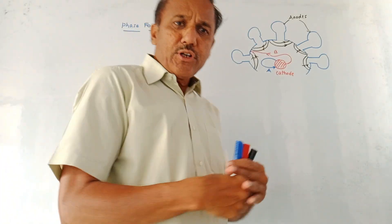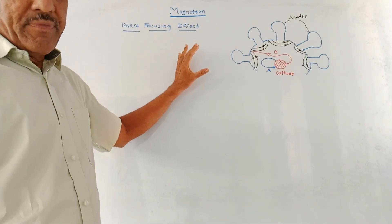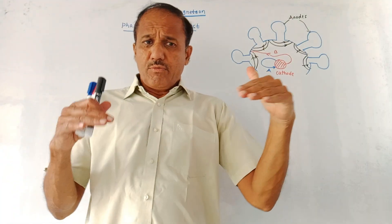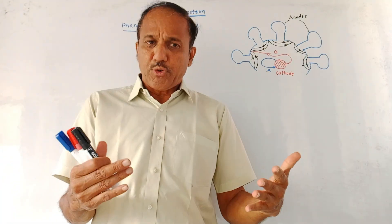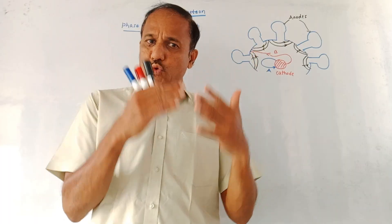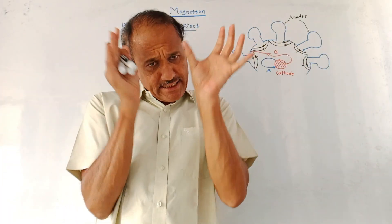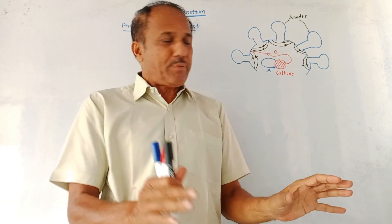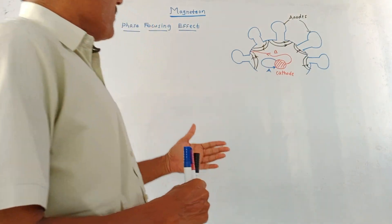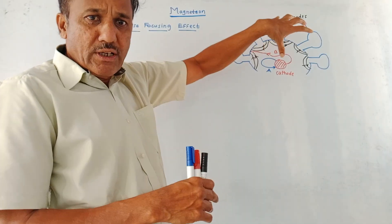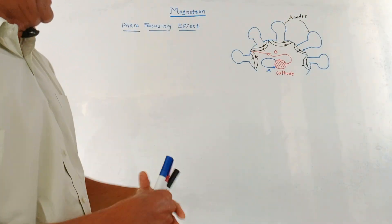Next, an important part is the phase focusing effect. We have studied the bunching process in the two-cavity klystron as well as the reflex klystron. The same type of bunching process takes place in the magnetron. This diagram shows how the phase focusing effect takes place.